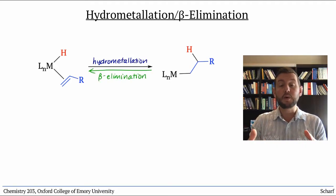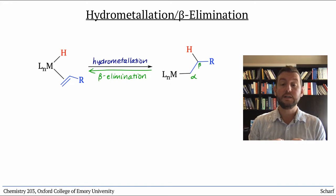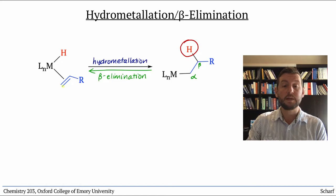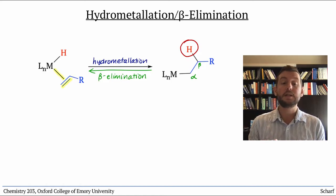It involves the removal of a hydrogen beta to the metal and the formation of a new carbon-carbon pi bond, which generally stays bonded to the metal as a new L-type ligand. The hydrogen becomes an X-type ligand, a hydride.